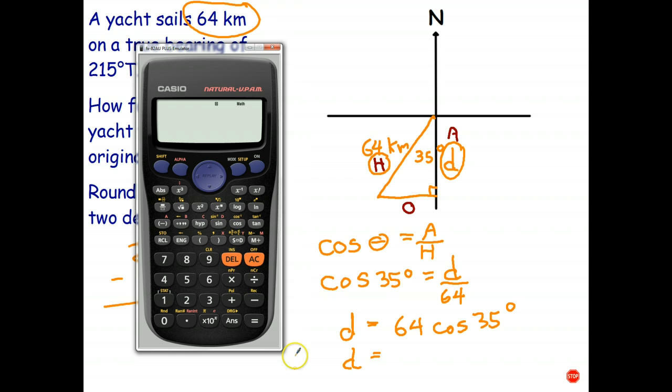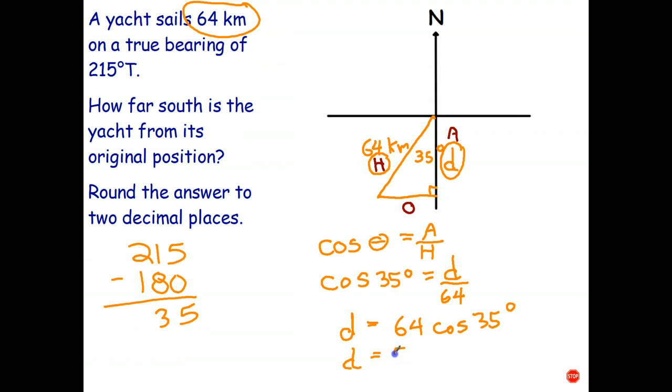And we need to round this to two decimal places. So 64 cos 35. Let's go get our calculator and work it out. 64 times cos 35, close brackets. Check that what I've typed is what I've written. Yes it is, and two decimal places: 52.43. So 52.43 kilometers.